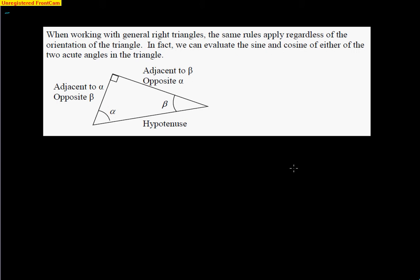When working with general right triangles, the same rule applies regardless of the orientation of the triangle. We can evaluate sine and cosine of either of the two acute angles. If our focus is on alpha, the hypotenuse doesn't change — it's always across from the right angle. Across from alpha is our opposite side, and adjacent to alpha is the side right next to it. However, if I turn my attention to the other angle, beta, the opposite and adjacent do switch around. The hypotenuse cannot change no matter what, because it is always directly across from the right angle.